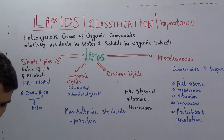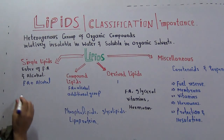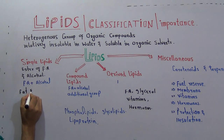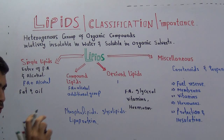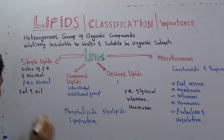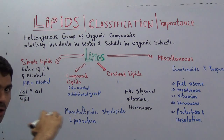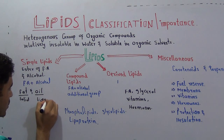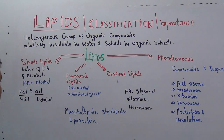So what are the examples of simple lipids? We have two examples. The first one is fats and oils. Fats and oils are actually the same thing — there is only a difference of physical nature. Fat is solid at room temperature while oil is liquid at room temperature. Both are simple lipids.